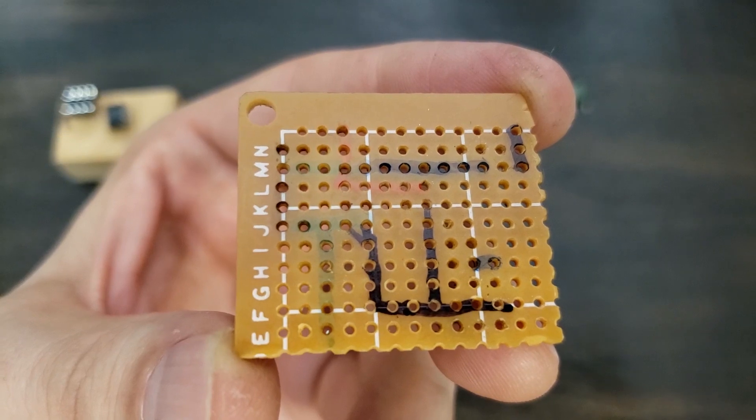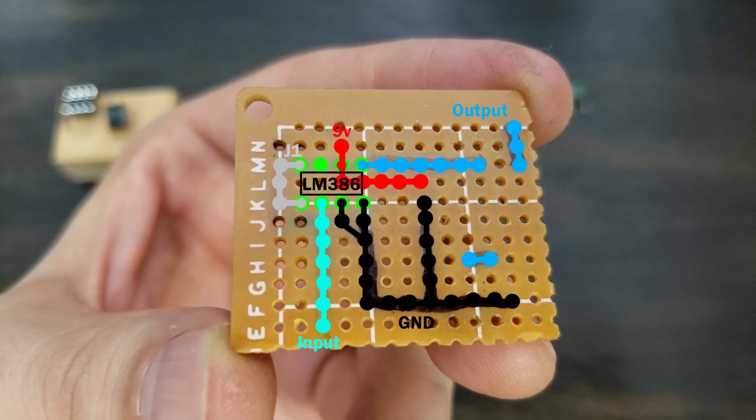First it's important to map out your circuit, so that's what I've done here. I color-coded this perfboard from the top with magic marker to make it easy to lay out my components and wires. The chip legs are green, the input is bright blue, the output is dark blue, power is red, and ground is black. The gain jumper is gray.